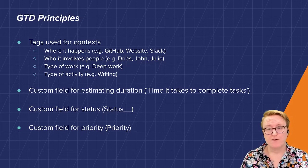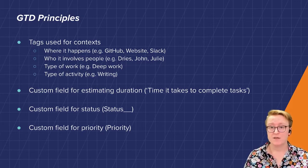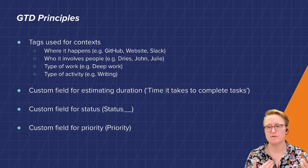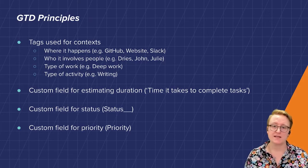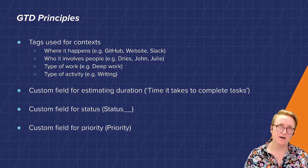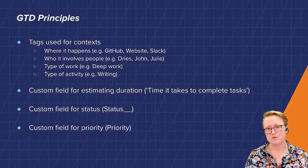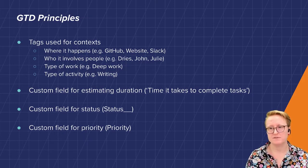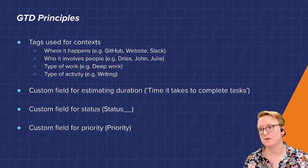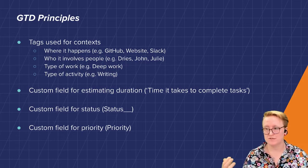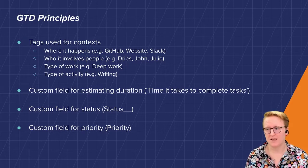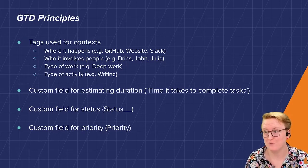I use a custom field in Asana for guesstimating how long it's going to take — that's called 'time it takes to complete tasks'. One for the status — whether it's in progress, whether it's blocked, whether I'm waiting for something — that's called 'status__'. And a custom field for priority, which is called priority — high, medium, and low. Mainly I use the high one to flag things that absolutely must be done by that date. When I use a due date and it's high, that's a hard stop. Low priority is for stuff that's more like I could do this if I have time — it does need to get done, but it's not something I absolutely have to do right now.